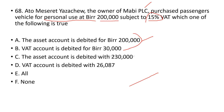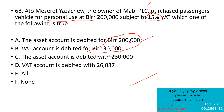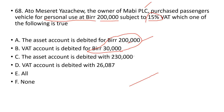If the asset is debited, the corresponding entry is cash or accounts payable credited. The asset is debited and cash is credited. To record the purchase, debit the asset account and credit cash — that is the correct journal entry for this transaction.